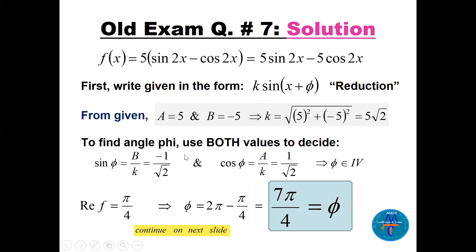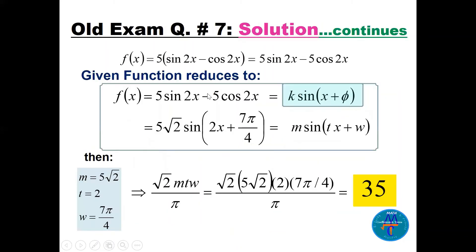To find φ: sin(φ) = b/k = −5/(5√2) = −√2/2, and cos(φ) = a/k = 5/(5√2) = √2/2. Since sine is negative and cosine is positive, φ is in quadrant four. The reference is 45° = π/4, so φ = 2π − π/4 = 7π/4. The function becomes 5√2 · sin(2x + 7π/4), where the argument 2x comes from the given function.